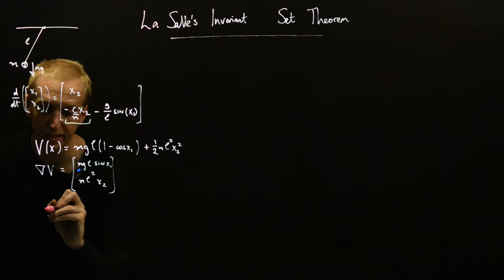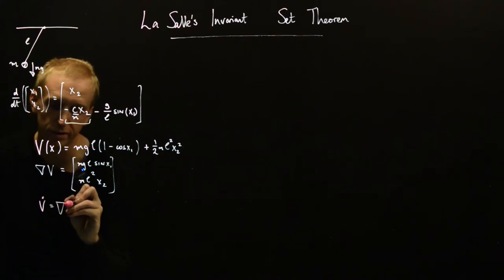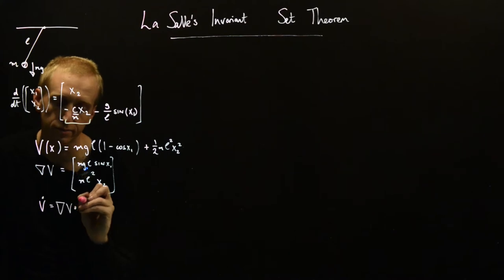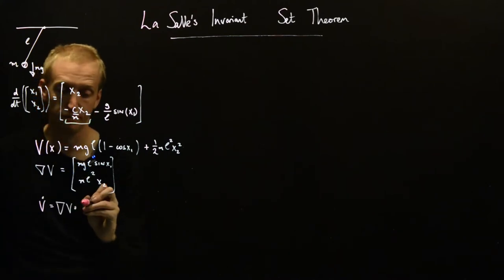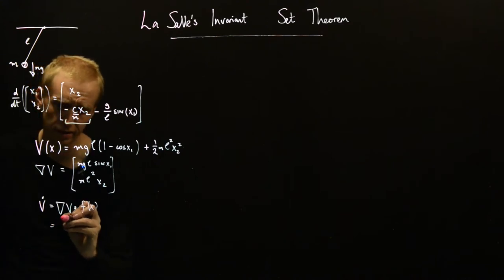And so, in order to check stability or asymptotic stability, we need to look at V dot. We need to look at V dot, which is equal to the dot product of the gradient of V with x dot of x.